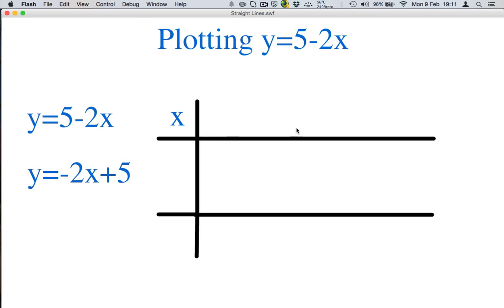Can you guess what x values we're going to use? That's right. 0, 1, 2 and 3. We're going to write our minus 2x here. Then our plus 5. So let's do our multiplications.